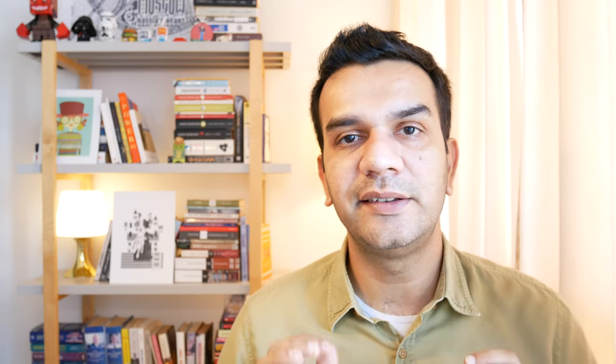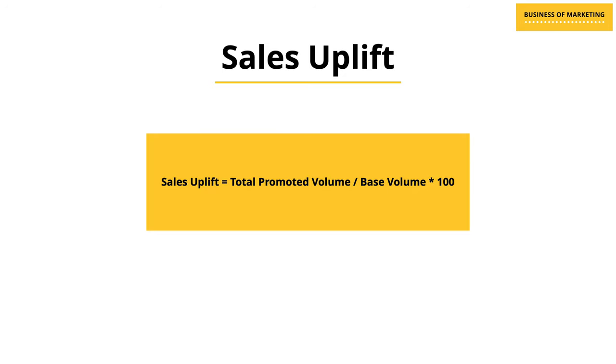The last measure is sales uplift, used in the context of measuring marketing efficiency. Sales uplift is referred to as a percentage or an index — it is the additional volume of sales generated beyond what is expected from a merchandising or promotional activity. To calculate sales uplift, take the total promoted volume divided by the base volume and multiply by 100. Sales uplift is often wrongly used to indicate simply the increase in sales; in reality, it is about the increase above what was already expected due to a promotional or merchandising effort.